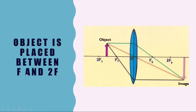Number four: when the object is placed between f and 2f. With the help of the same three rays, we get an enlarged and real image of the object on the opposite side of the lens. We use this principle in projectors or for enlarged photographs.